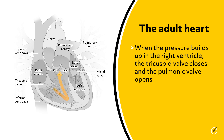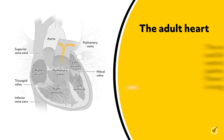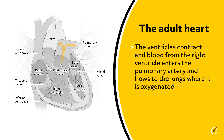When the pressure builds up in the right ventricle, the tricuspid valve closes and the pulmonic valve opens. The ventricles contract and blood from the right ventricle enters the pulmonary artery and flows to the lungs, where it is oxygenated.